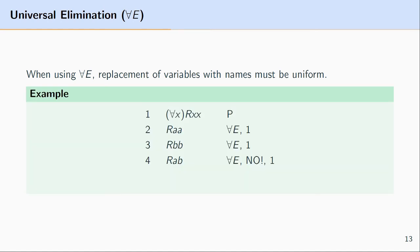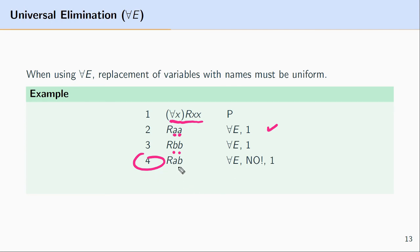Let's look at an example of this. Here at line 1, we have for all X, RXX. At line 2, we make use of universal elimination, and we replaced all of the bound variables with a name — and that name is the same name. At line 3, we use universal elimination again on line 1 and replace the bound variables X with the same name. But line 4 is a case where we've taken those bound variables and in one case replaced X with A, and in the other case replaced X with B. This is not an acceptable use of universal elimination.